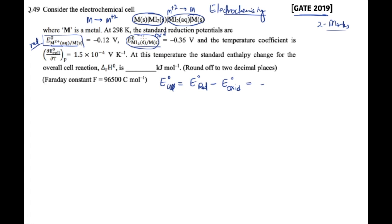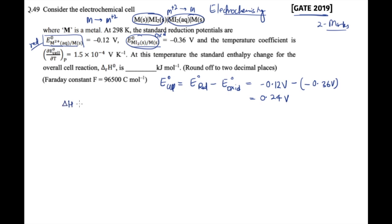To calculate E°cell we use: E°cell = E°cathode − E°anode, i.e., E°reduction − E°oxidation. Both values are already expressed as reduction potentials, so we keep the signs as given. E°cell = (−0.12) − (−0.36) = −0.12 + 0.36 = 0.24 V.